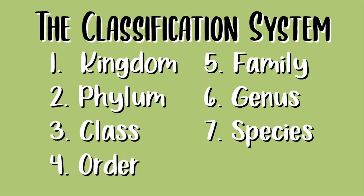There are seven levels in the classification system: kingdom, phylum, class, order, family, genus and species.